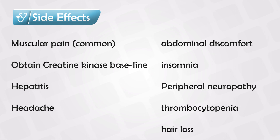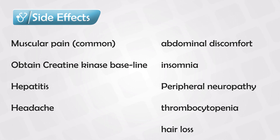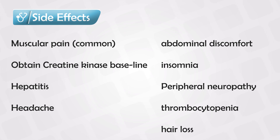Thrombocytopenia, or low platelet count, causes easy bruising, as well as petechia and easy bleeding in the body — most commonly in the gums. When the patient brushes their teeth, they will complain of having some blood on their brush. And finally, reversible hair loss. That's all I have, and thank you so much for watching.